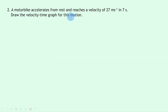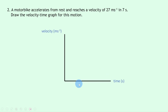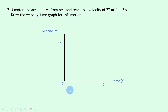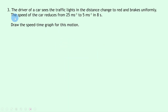Question two says a motorbike accelerates from rest and reaches a velocity of 27 meters per second in seven seconds — draw the velocity-time graph for this motion. Again we start with our axes, labels, and units: velocity in meters per second on the y-axis and time in seconds on the x-axis. We mark the origin, seven seconds on the x-axis, and 27 meters per second on the y-axis. The motorbike starts from rest at the origin, and for uniform acceleration we have a positively sloping diagonal line, so in seven seconds the velocity reaches 27 meters per second.